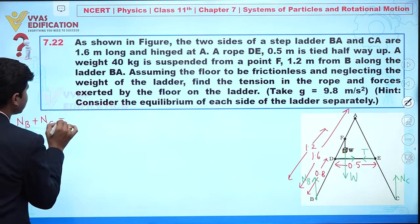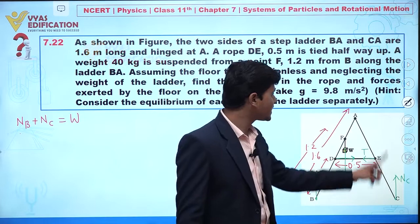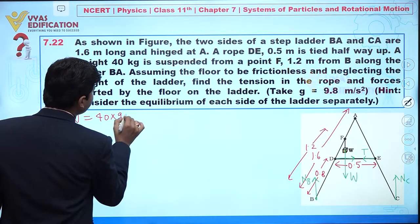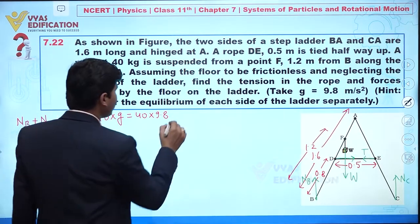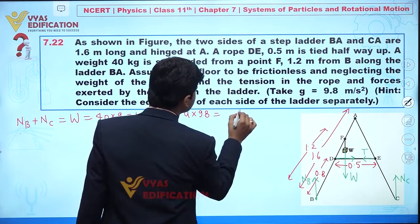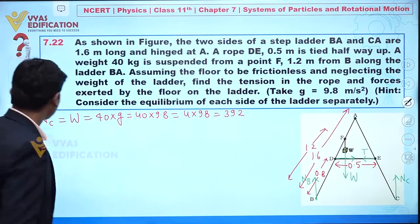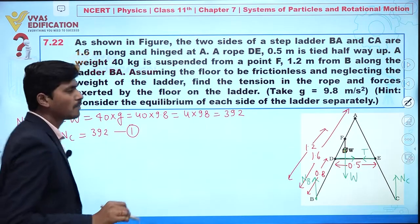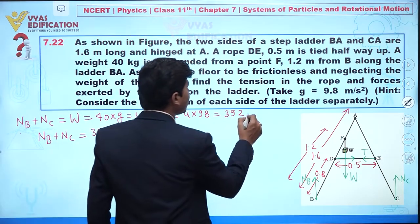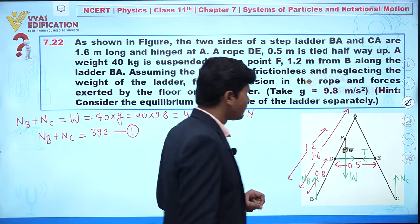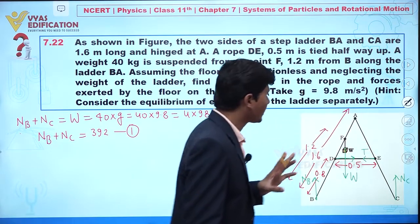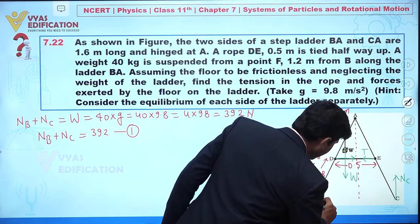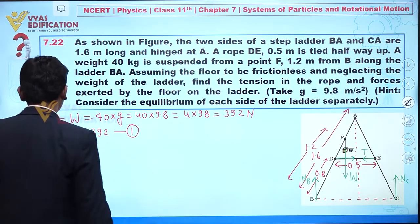From equilibrium, we can write: NB plus NC equals W. Since W is 40 kg, we have W equals 40 times 9.8, which equals 392 N. So our first equation is NB plus NC equals 392. Now I am taking torque with respect to point A.